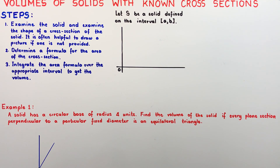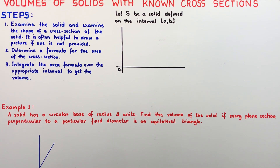Such areas may be that of a triangle, square, rectangle, circle, circular sector, parabolic segment, or an ellipse, because the formulas for the areas of these geometrical figures are known to us. These are solids with the property that the cross-sectional area in a plane perpendicular to the x-axis can be expressed as a function of x.